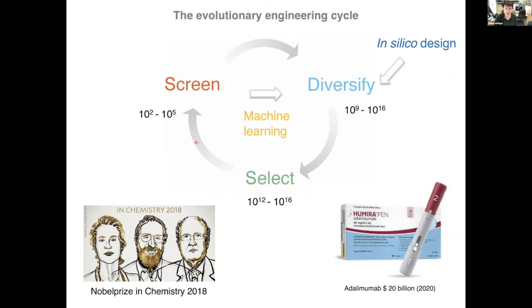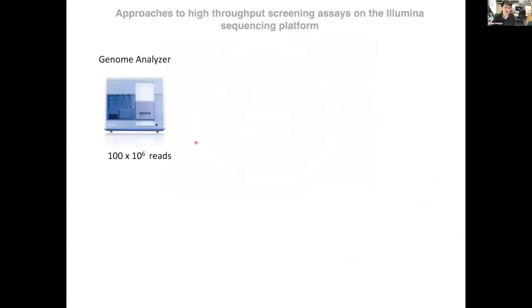And one key technique that has allowed that is next generation sequencing, particularly Illumina next generation sequencing, which allows you to count the genotypes in a very large pool at a point where screening would be completely hopeless. And you can then maybe screen the most highly enriched or the most abundant genotypes in that particular pool. But as I'll show you later, there's pitfalls to that as well, because again, enrichment doesn't always mean that these are the best, the most functional clones.